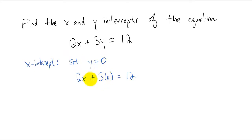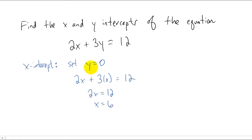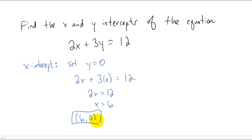If we plug y equals zero into our equation, that term goes to zero and we're just left with 2x equals 12. Divide both sides by two to get x equals six. So we know that when y equals zero, x equals six. That x and y value gives us a point: (6, 0). And that point is the x-intercept for this graph.